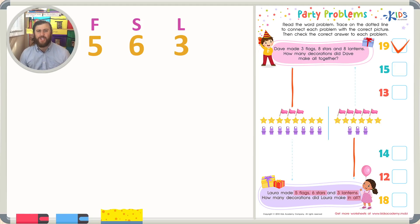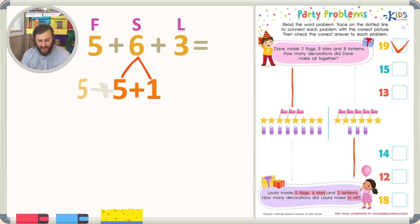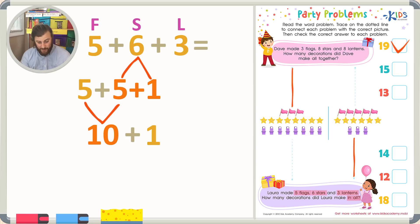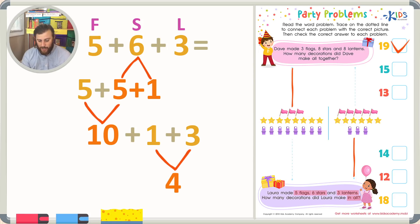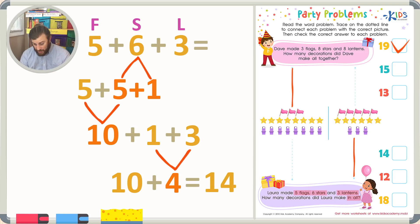Now we have to figure out how many decorations she made in all. So we're going to have to add five plus six plus three to find out the total. The commutative property says we can add in any order we want. I'd like to add five plus six to get started. I know another way to say six is five plus one, so first I can add five plus five, which is ten. What I have left is plus one from the six, and then plus three. I can easily add one plus three, which is four. Now I have ten plus four. Counting on from ten: eleven, twelve, thirteen, fourteen. So ten plus four is fourteen, meaning that Laura made fourteen decorations in total.